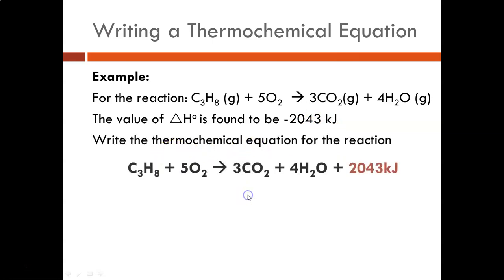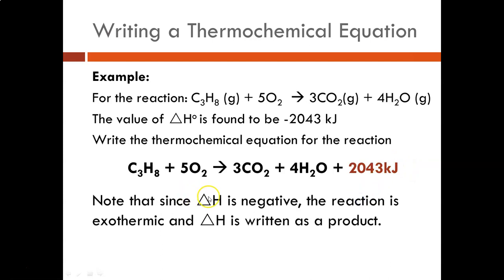Writing the thermochemical equation, I'm going to have to write my delta H as part of the products. So propane plus oxygen produces carbon dioxide and water and releases 2,043 kilojoules of energy. Note that since delta H is negative, the reaction is exothermic and delta H must be written as part of the product.